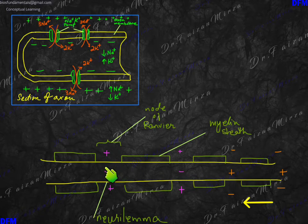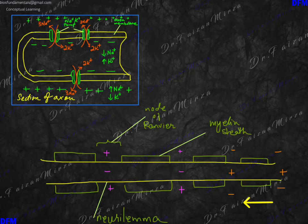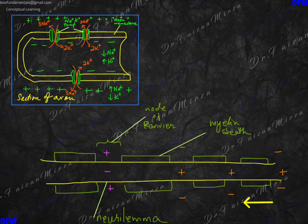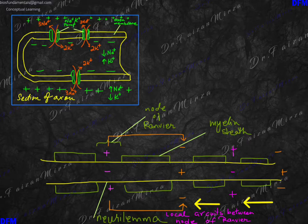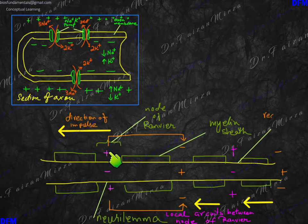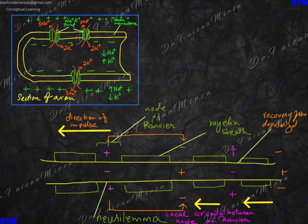You can see that the nodes of Ranvier which are yet to follow are still not depolarized. So as the impulse keeps moving forward, the next node of Ranvier becomes depolarized and then the next gets depolarized, and in this case when the wave of depolarization keeps trailing ahead, localized circuits develop. When localized circuits develop, what are localized circuits?